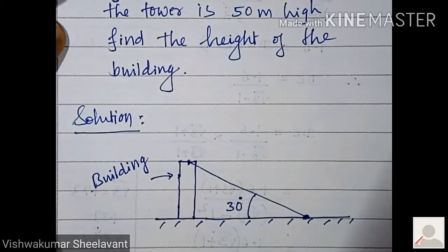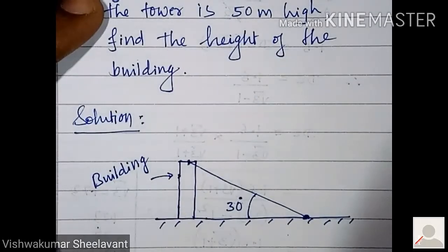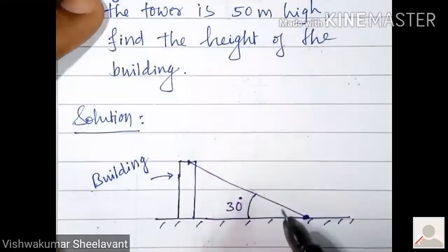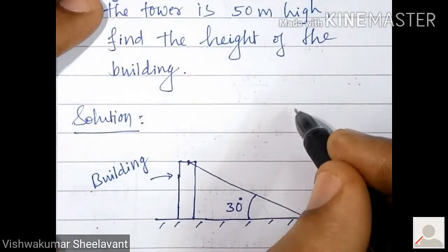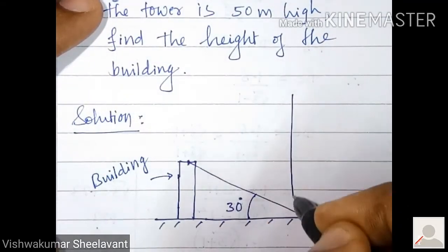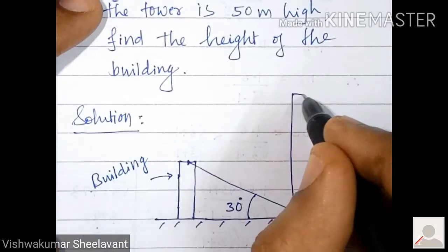And the angle of elevation of the top of the tower from the foot of the building is 60 degrees. Definitely, tower should be taller than building. So I will show the tower like this.